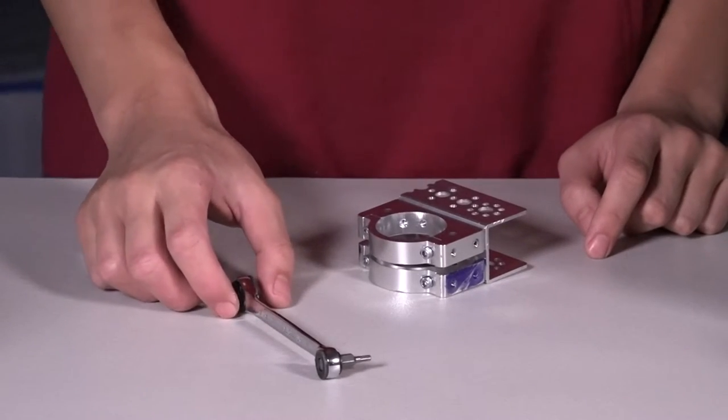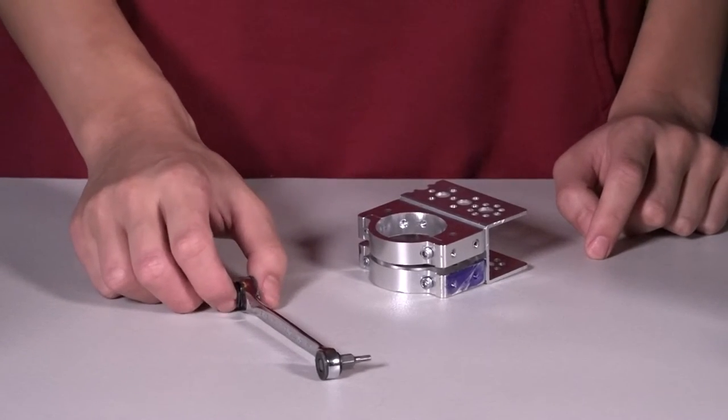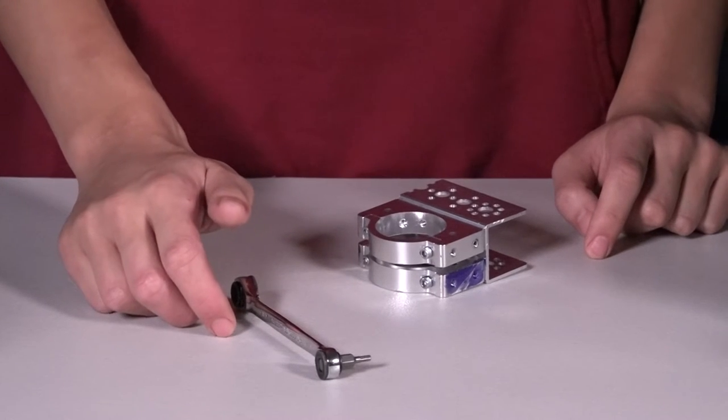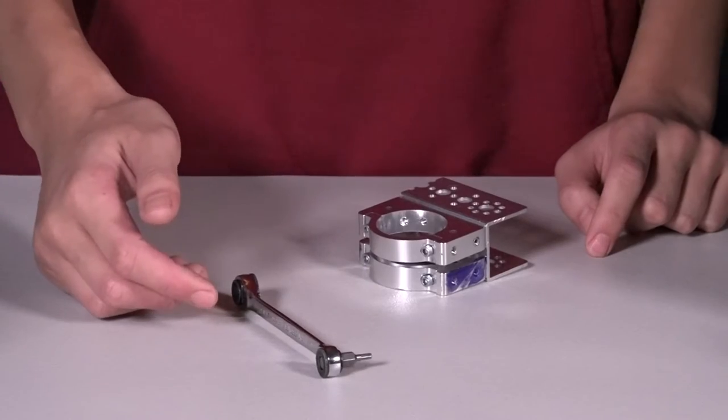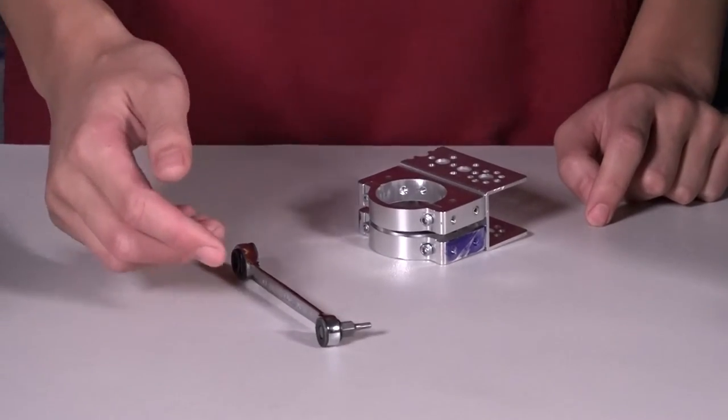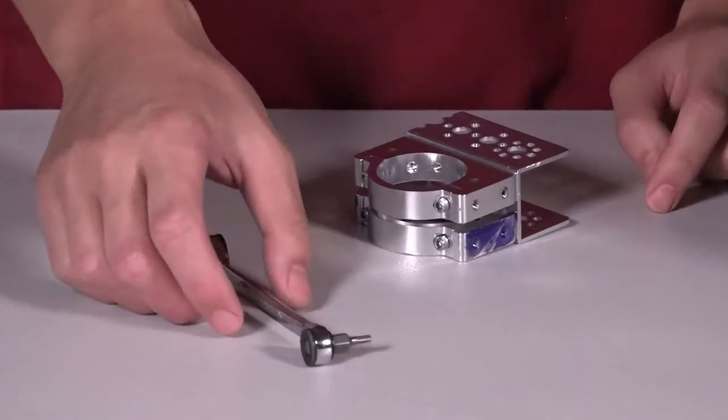This is another handy tool we have in our toolbox. It's just a ratchet with a hex bit in it. It's good for loosening or tightening things, especially if you don't have room to turn your hex key all the way around. Why don't we just demonstrate.